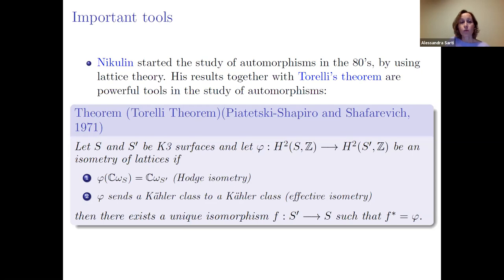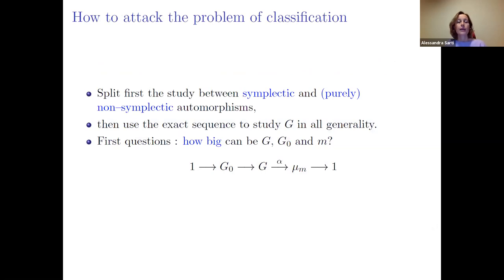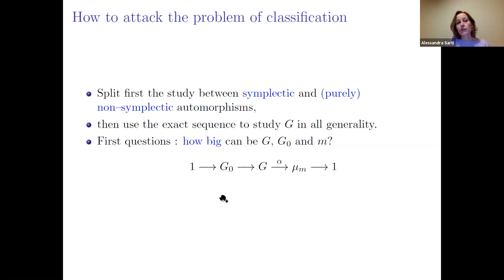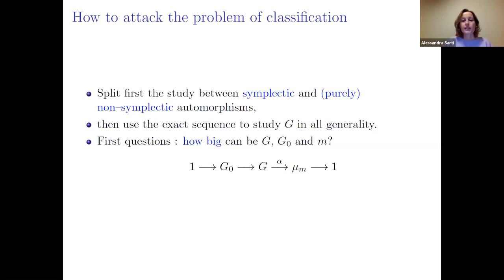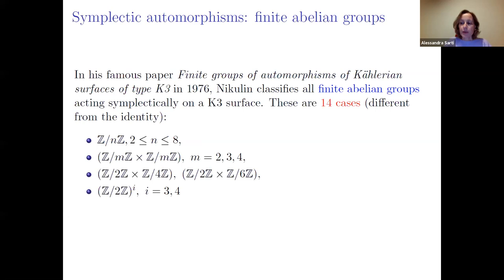One approach to the problem is to split it into studying symplectic and purely non-symplectic automorphisms. This allows you to understand the part g₀ and the part μ_m of the sequence, and then combine results on g₀ and μ_m to get information on g. A natural first question is: how large can g, g₀, and m be?